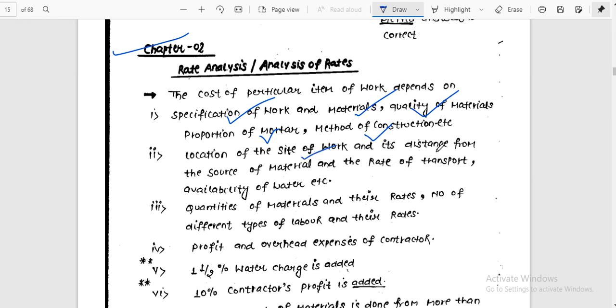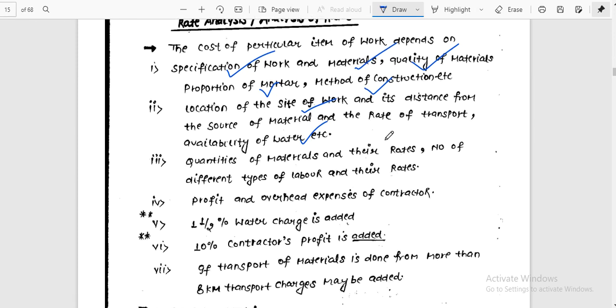Location of the site of work and its distance from the source of the material, the rate of transport, and the availability of the water. What is the quality of materials, quantities of the materials, what are the current rates, the number of different types of labors needed, and their daily charges.